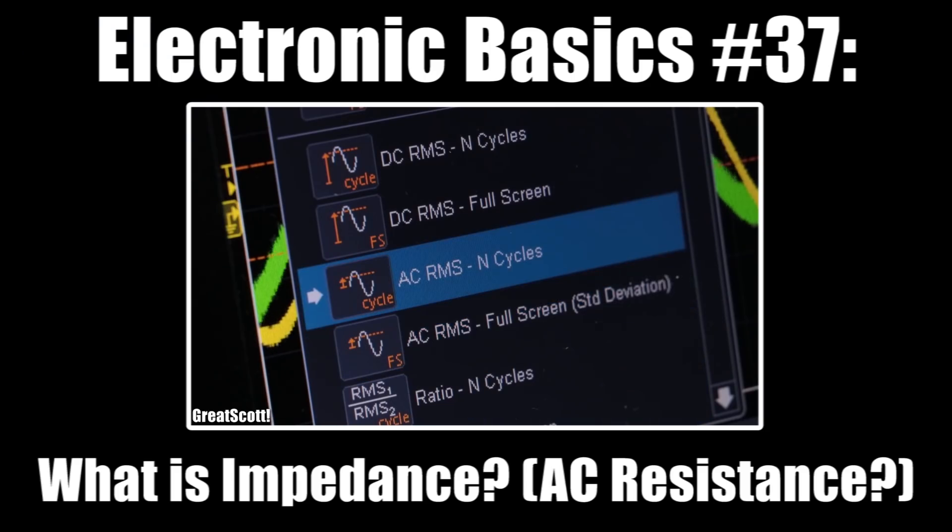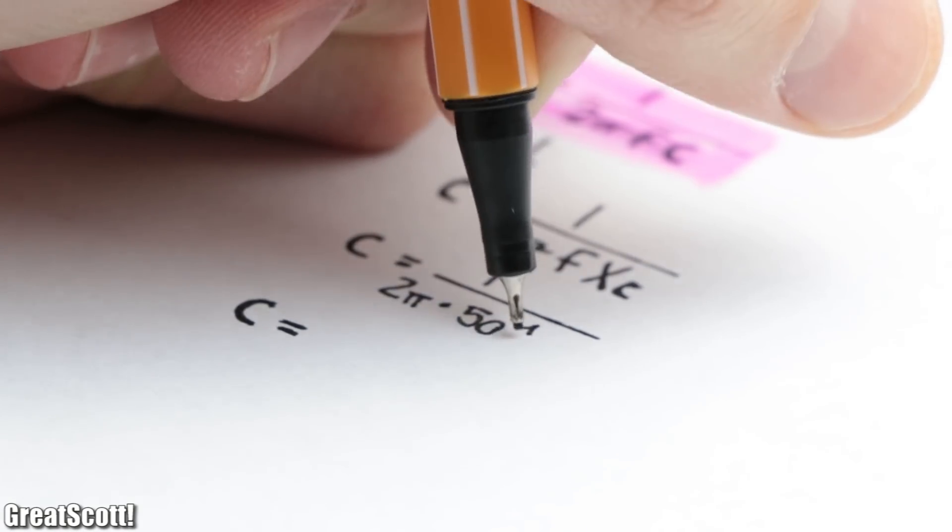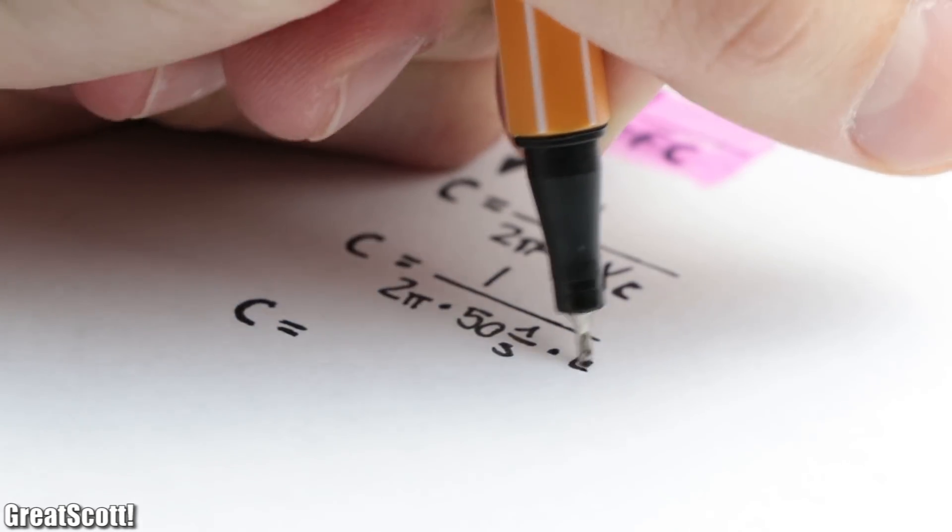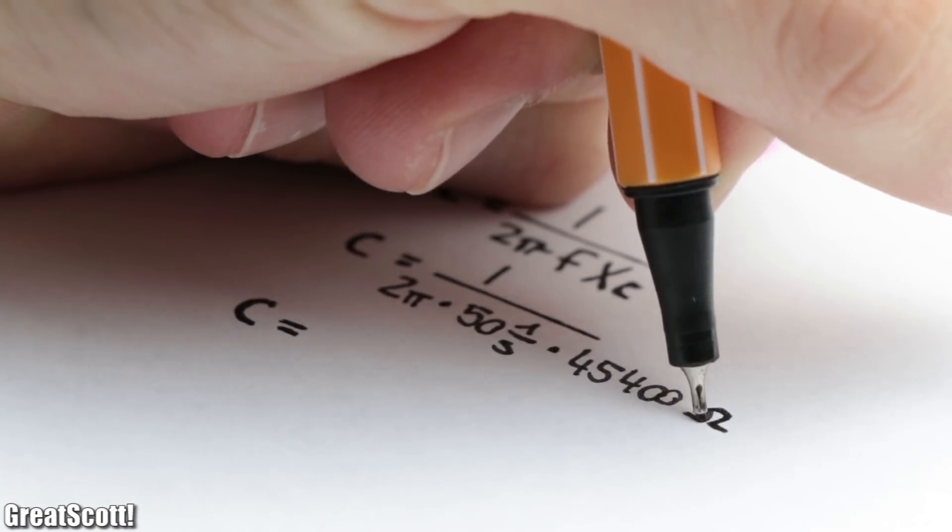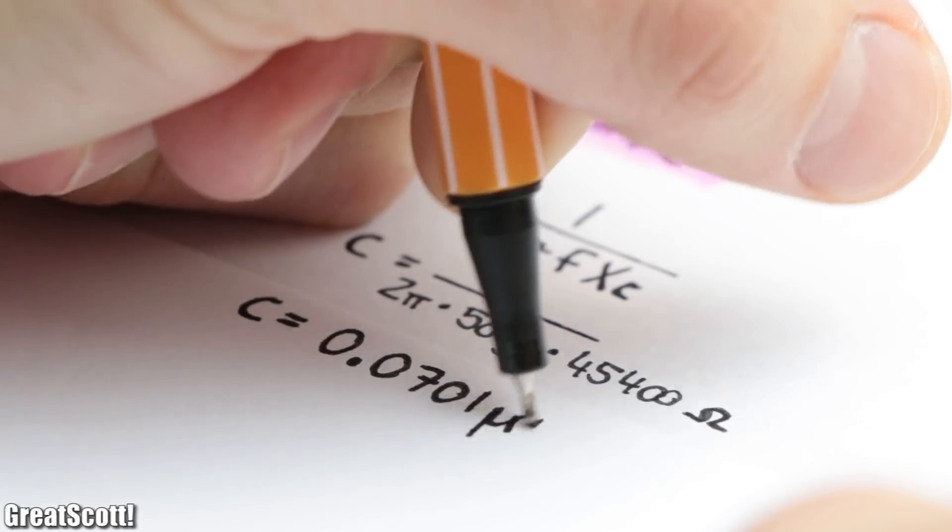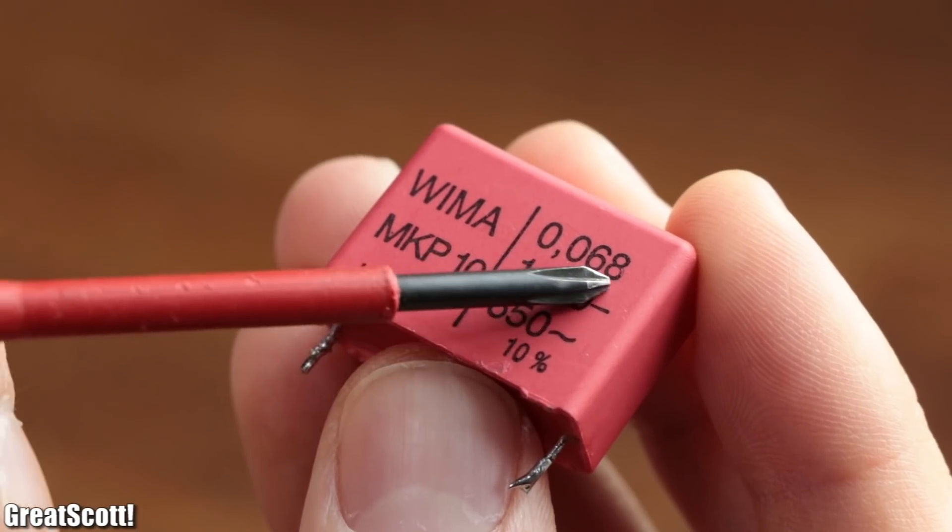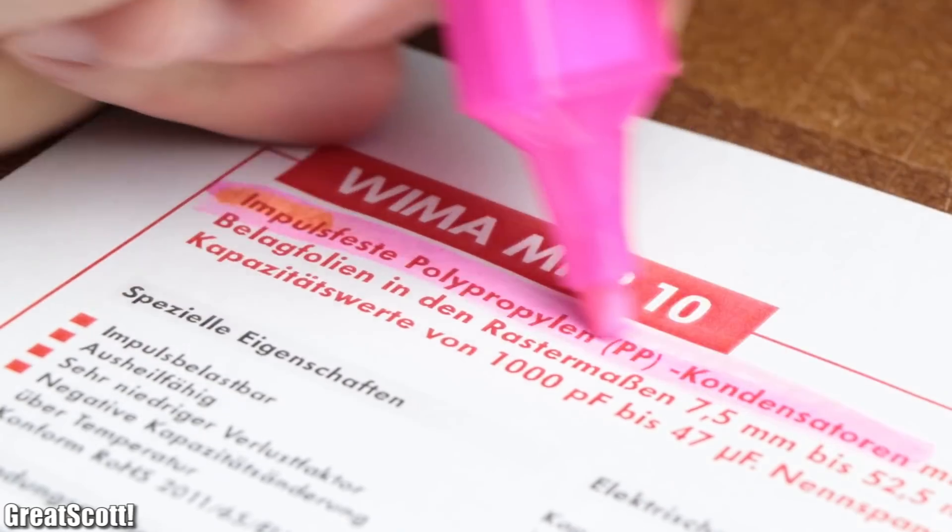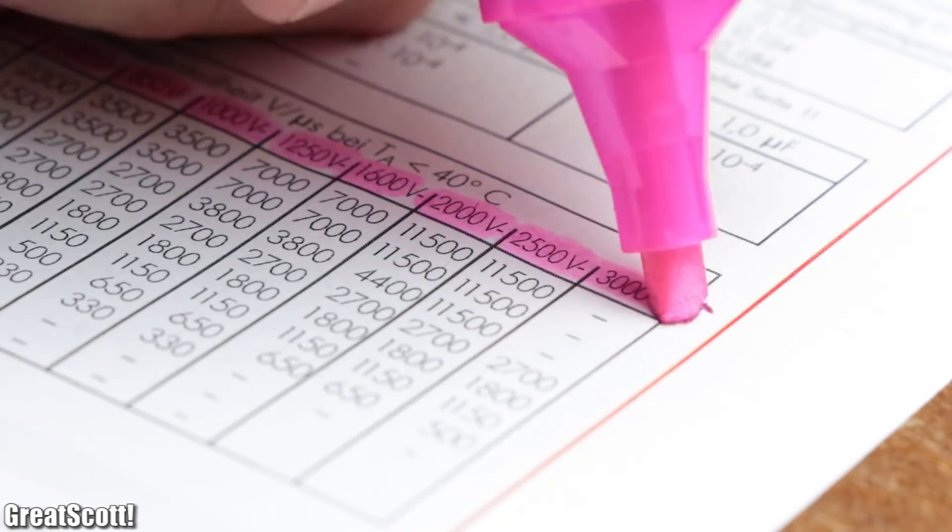Feel free to watch my basics video about impedance to understand this topic better. Anyway, after using the reactance formula of a capacitor to calculate its capacitance so that we get an apparent resistance of 45.4 kilo ohms, I got a value of 0.0701 microfarads. So I used a 0.068 microfarad MK10 capacitor, which is an impulse capacitor that can handle short voltage spikes which come with a higher voltage.